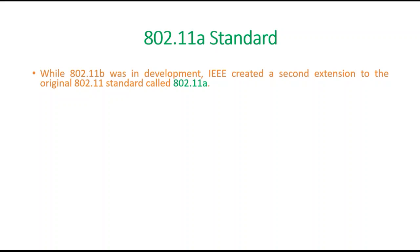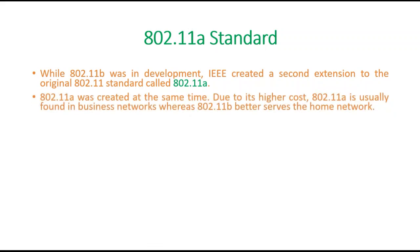Coming to the 802.11a standard: while 802.11b was in development, IEEE created a second extension to the original 802.11 standard called 802.11a. 11a was created at the same time as 11b, but due to its higher cost, 802.11a is usually found in business networks, whereas 11b better serves the home network.